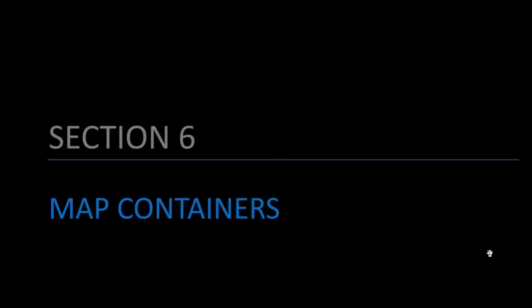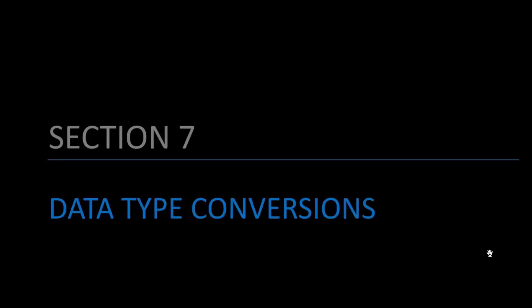In section six, we will be looking at the MAP container data type, covering different operations on MAP containers and how to create them. Finally, in section seven, we will look at how to convert between these different data types — first from a given data type to others, and then from different data types to a target data type.